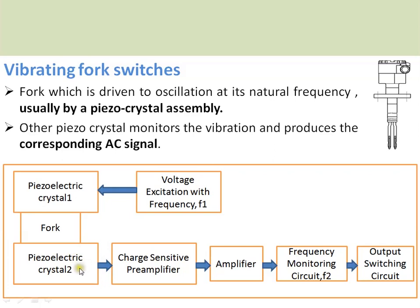The monitoring crystal generates a charge which is converted to a voltage by a charge sense preamplifier, then amplified by an amplifier. Since it is an AC signal, it is monitored by a frequency monitoring circuit. There is an output switching circuit that responds to changes in frequency — it can change a relay, or provide an NPN or PNP output that can be connected to a PLC.